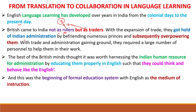With the expansion of trade, they expanded their trade and got hold of Indian administration by befriending the numerous princes and overpowering them. When they came to the administration, they required a large number of personnel — working staff — to help them in their work. The best of the British minds thought it was worth harnessing Indian human resources for administration. Instead of importing Britishers from England, it would be expensive, so it was better to train the Indian people.